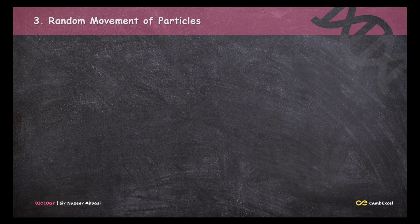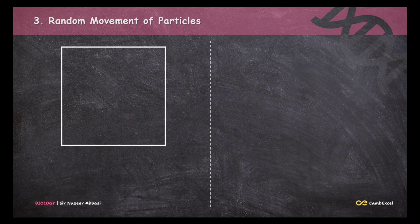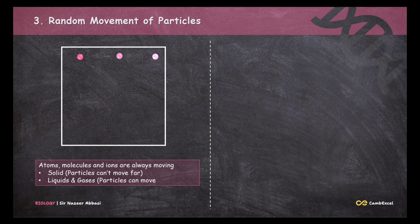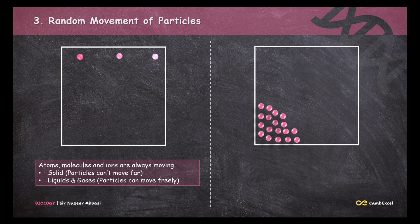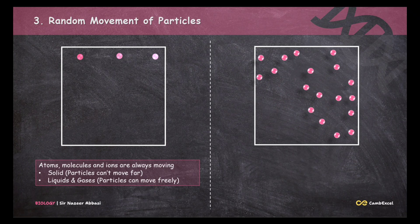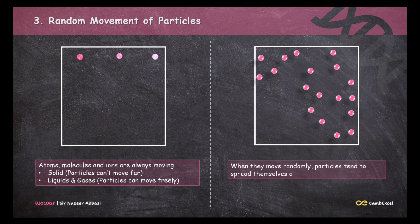Next, we will see the random movement of particles. In matter, atoms and molecules are always moving, but movement differs across states of matter. In solids, particles cannot move far, but in liquids and gases, particles can move freely. That is why diffusion can only happen in liquids and gases. When particles move randomly, they collide with each other and this collision tends to spread them out as evenly as possible.